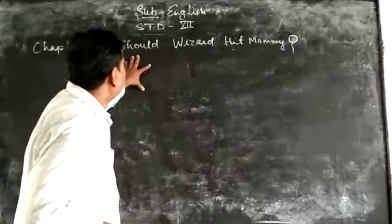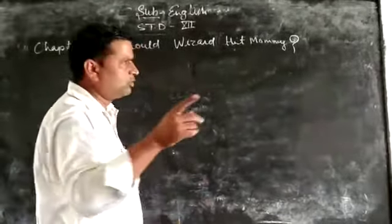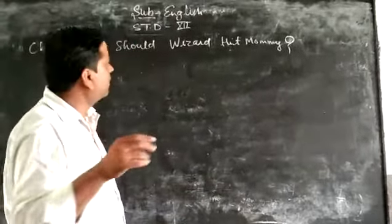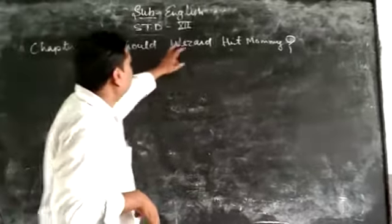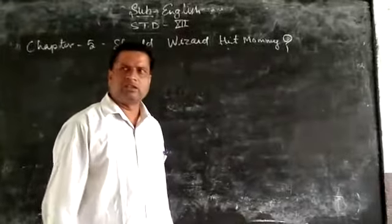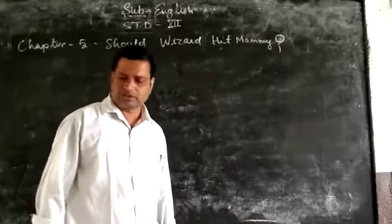His mother took an umbrella and went to the wizard, threatening him to change Roger back as he was before. But the wizard denied, so Roger's mother hit the wizard. But the smell was good. This is the story of the lesson.